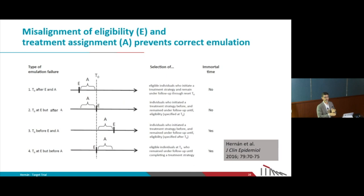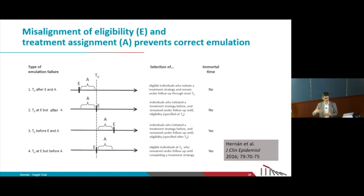This graph shows four examples in which assignment A and eligibility E are not aligned at time zero. One example is when we find people who meet eligibility criteria at time zero, but they were assigned to treatment before time zero — we are using current or prevalent users, people who have been on treatment for some time, which may introduce selection bias. Another example is immortal time bias, where at baseline people meet eligibility criteria but are assigned to groups based on what they do in the future.